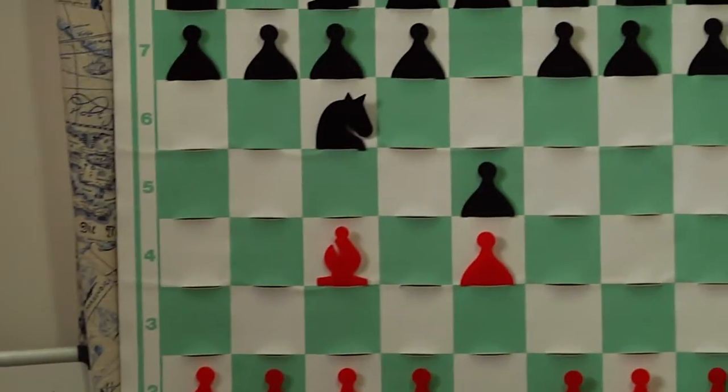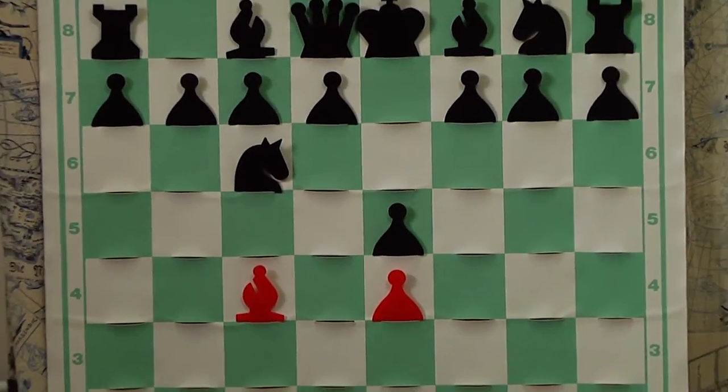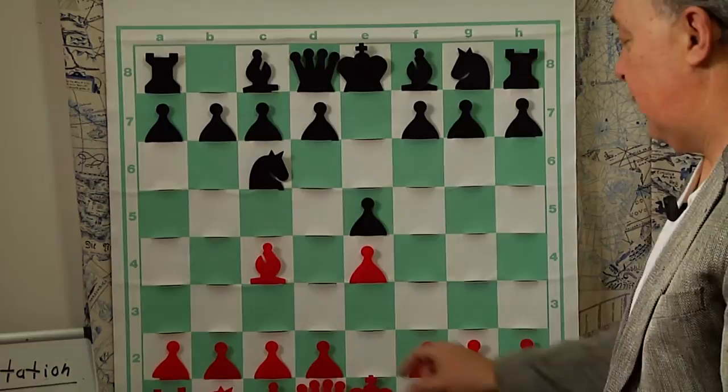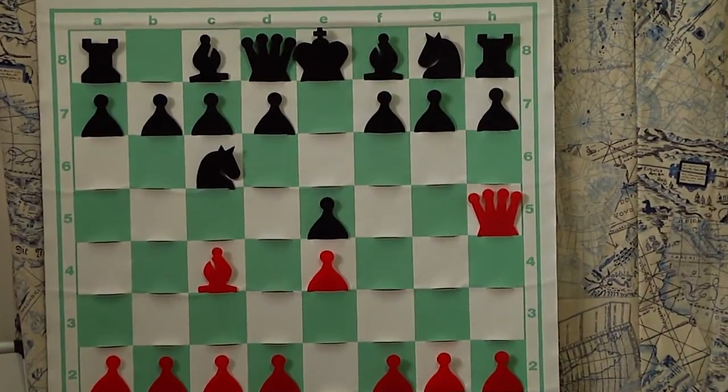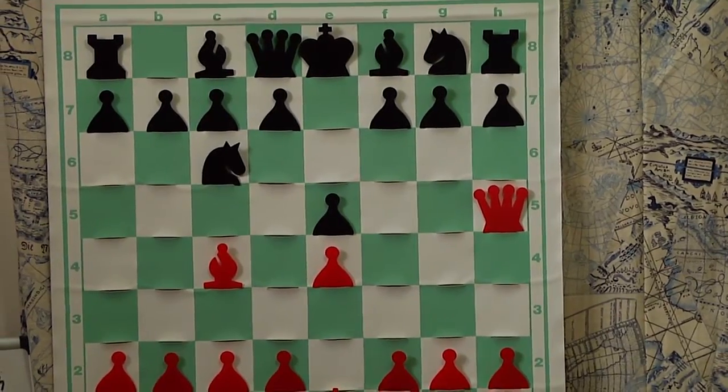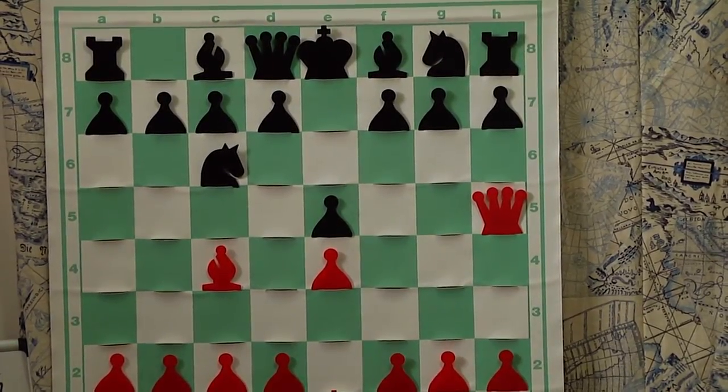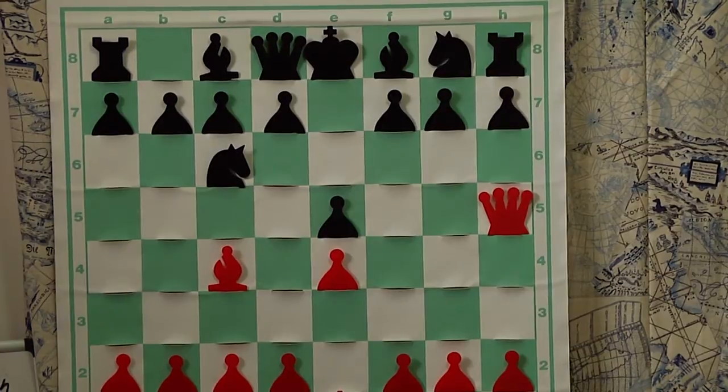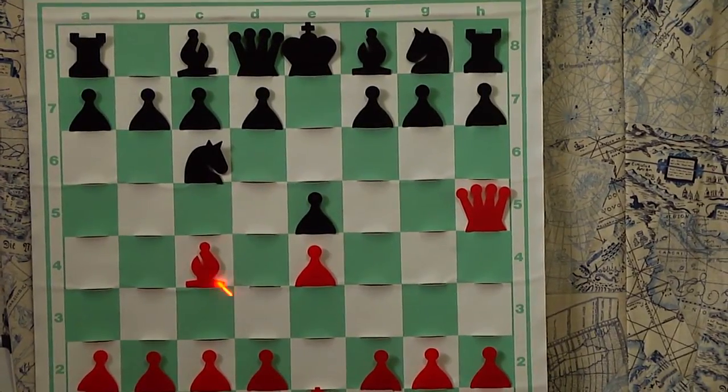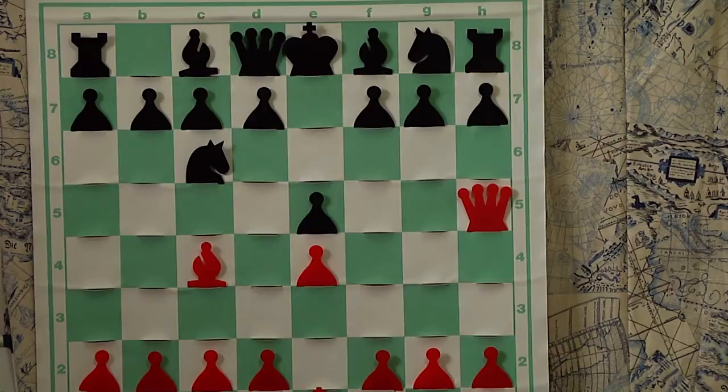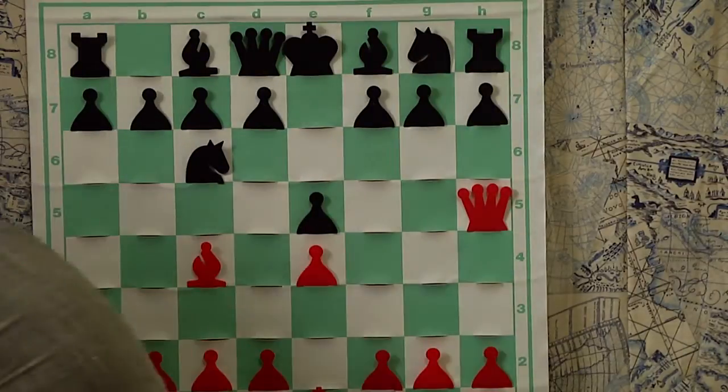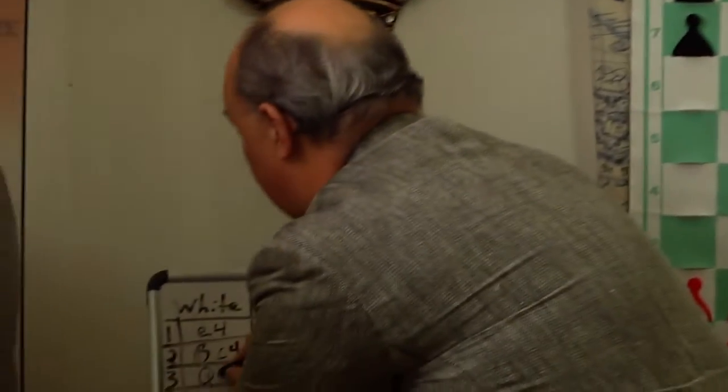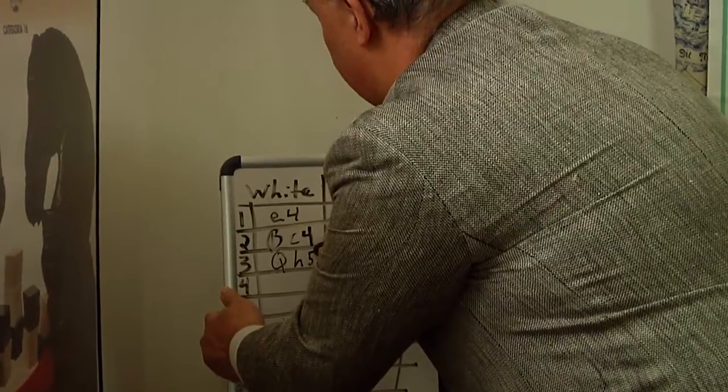And white will now respond with a very powerful and mate-threatening move, Qh5. I will point out that white has engaged, has played real fast and loose with opening principles, which we're going to cover in the next few lessons by bringing the queen out very early, very risky, bringing the bishop out before bringing out any knights, also going against opening principles. And we're going to write down this move using, of course, Q for the queen and the name of the square she moved to, which is h5.